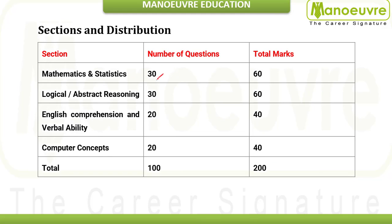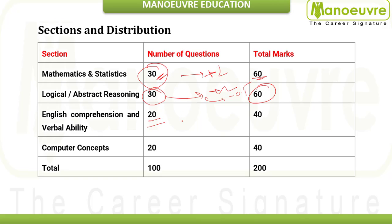Mathematics and statistics is the most major chunk, with 30 questions at plus 2 marks each — maximum 60 marks. Reasoning also has 30 questions with the same marking — maximum 60 marks. English comprehension and verbal abilities has 20 questions, and computer concepts has 20 questions worth 40 marks — a section where you can aim for 100% marks.